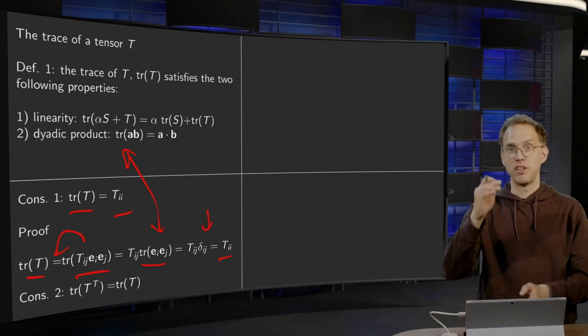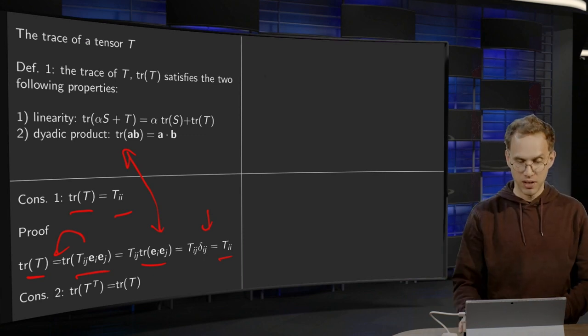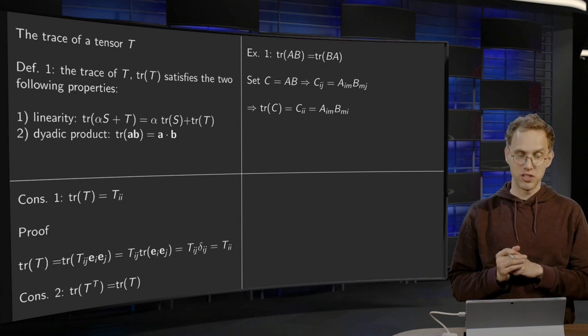Second consequence: you already see if you take the transpose, nothing happens. So the trace of T transpose equals the trace of T.